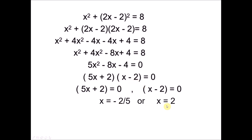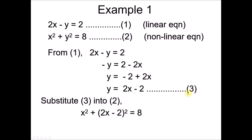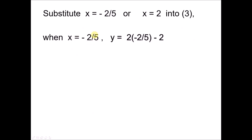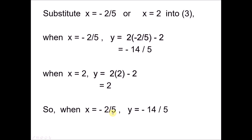After finding x, we still need to find y by substituting back into equation 3. When x is negative 2 over 5, substituting into equation 3 gives y equals negative 14 over 5. When x is 2, substituting gives y equals 2. Leave answers in fraction form. So the two solution sets are: x equals negative 2 over 5, y equals negative 14 over 5, and x equals 2, y equals 2.